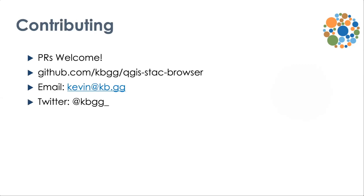You can contribute to the project. If you find any bugs or you have pull requests for improvements, just send them my way. There's the link to the GitHub repository. You can also reach out to me on my email — kevin@kb.gg — or my Radiant email — kevin@radiant.earth. And also on Twitter, I'm active there at kb.gg underscore. That basically covers all the functionality in the plugin. If you have any questions on getting it set up or you find any bugs, feel free to reach out. Thank you for your time.